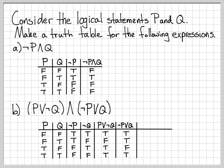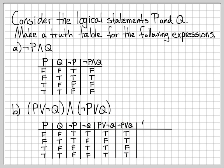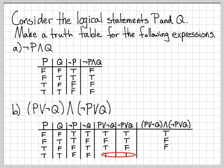Now I have the two intermediate pieces. To fill in the final column, I just AND these two things together. True and true is true. False and true is false. True and false is false. And true and true is true. So we've completed making a truth table for this slightly more complicated expression involving the logical statements P and Q.